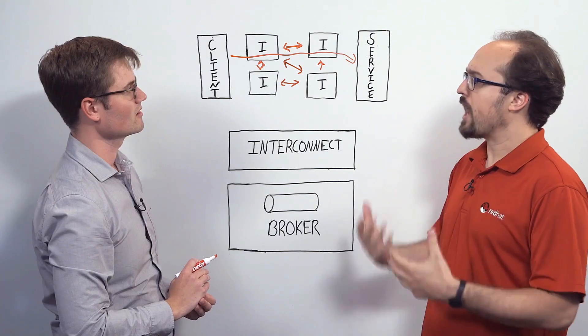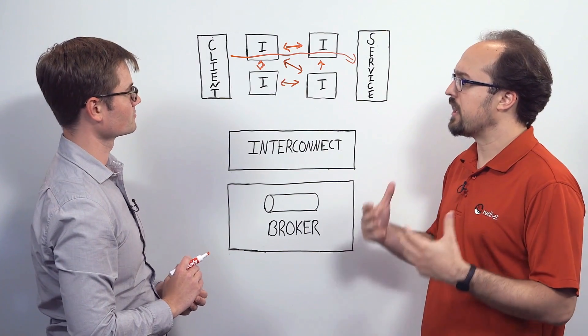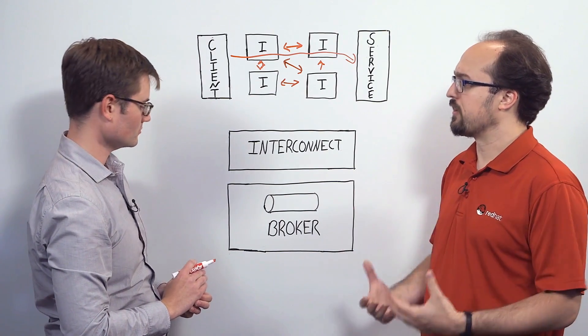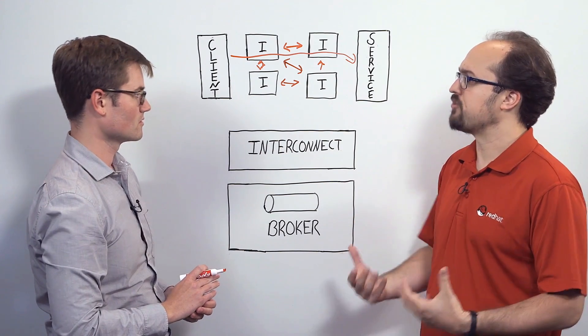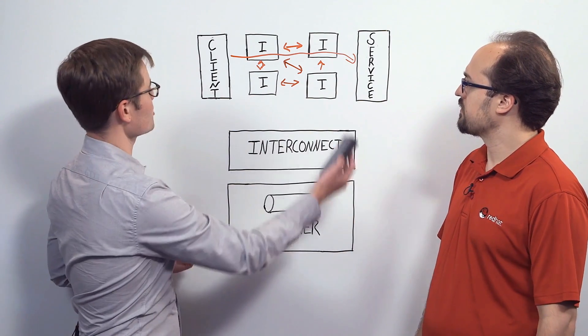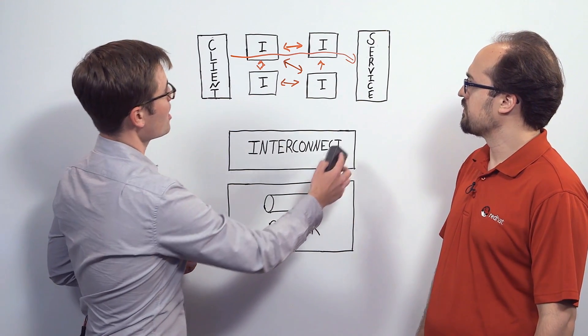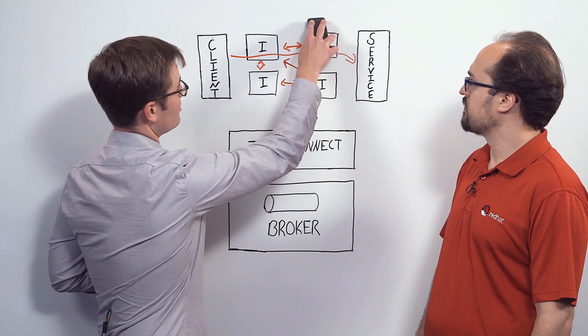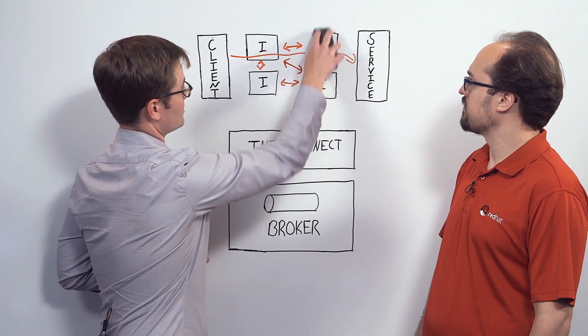What happens if an interconnect node fails? What is my HA approach? Sure, so say that there's a catastrophic failure on this interconnect node.